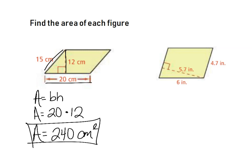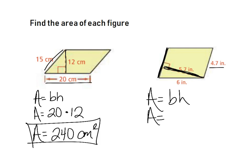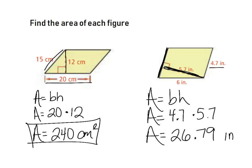The next one is the same picture but turned sideways. The height comes in perpendicular to the 4.7, so 4.7 is the base and 5.7 is the height. Area equals base times height: 4.7 times 5.7 gives 26.79 inches squared. Pay attention to the homework directions on rounding — they may want tenths.